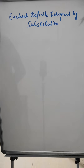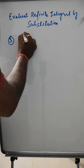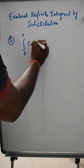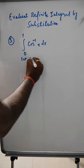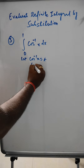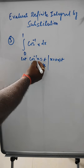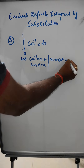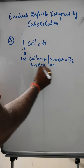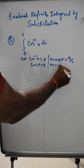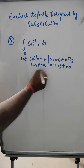The next problem is the integral from 0 to 1 of cos⁻¹x dx. We let cos⁻¹x = t, so x = cos t. When x = 0, cos t = 0 so t = π/2; when x = 1, cos t = 1 so t = 0.